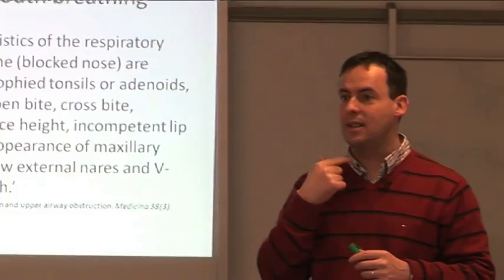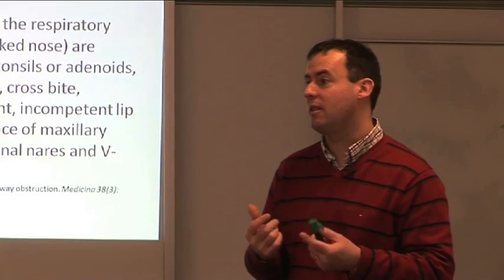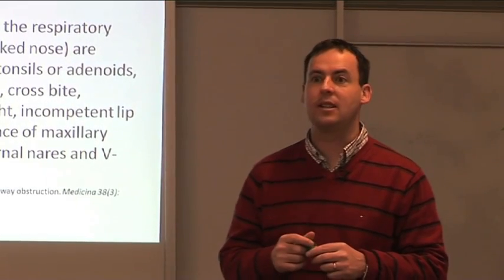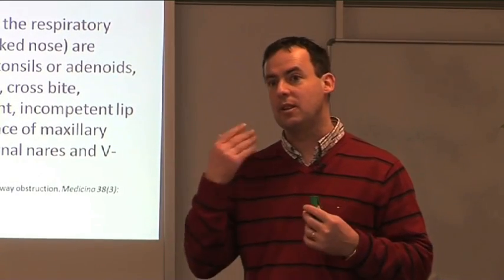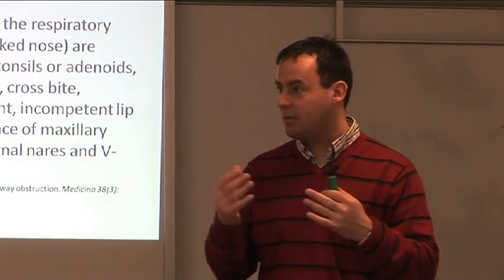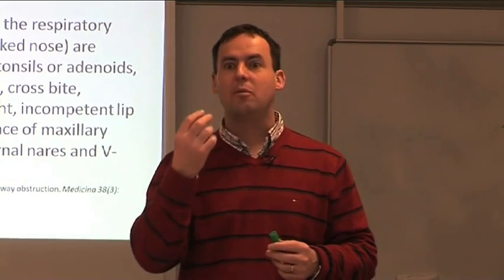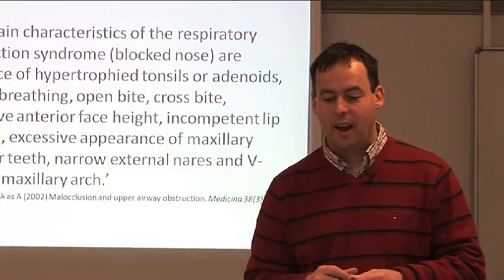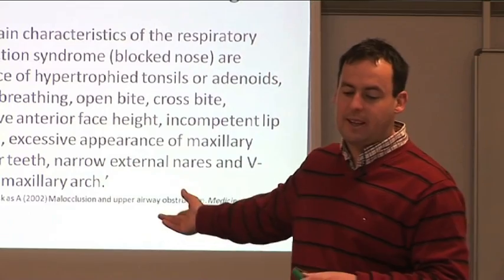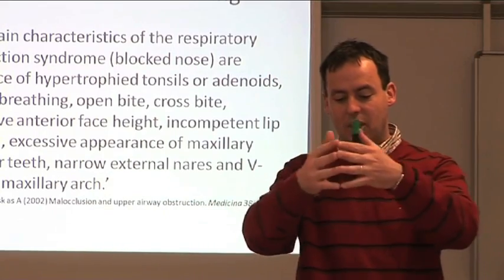I've spoken with different people involved in myofunctional therapy who have been working for 30 years with dentists, and they have many examples of children with enlarged tonsils that shrank as a result of achieving lip seal. Because if you breathe through your nose, your nose is your primary defense, but if you breathe through your mouth, your tonsils are your primary defense and your tonsils can become overburdened. You also see excessive appearance of the maxilla and anterior teeth, narrow external nares, and a V-shaped top jaw.